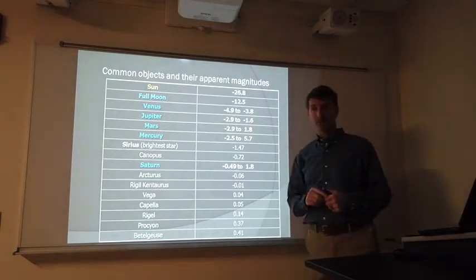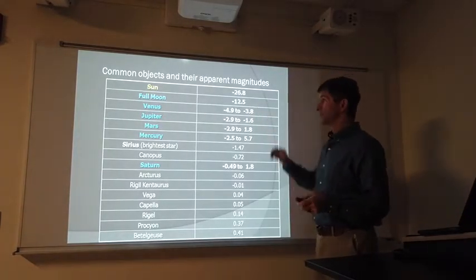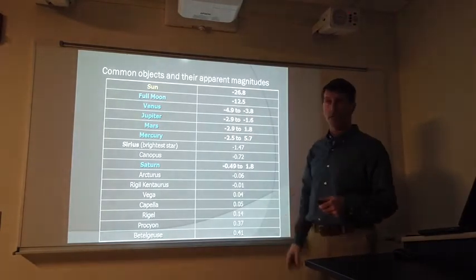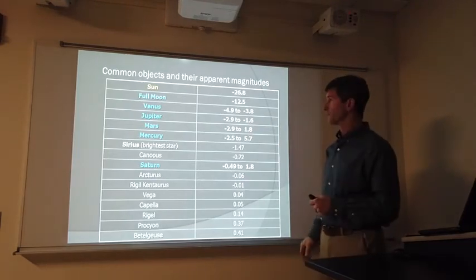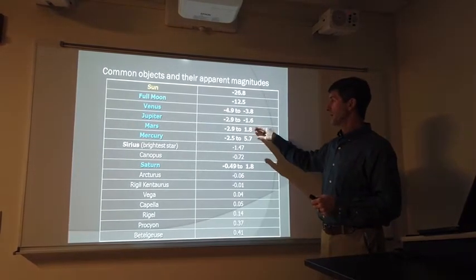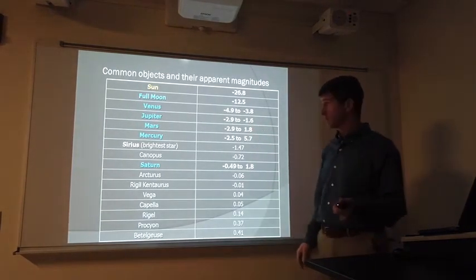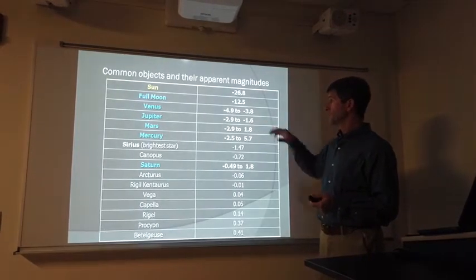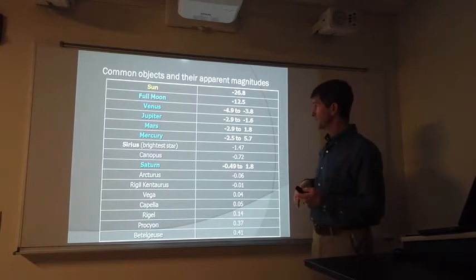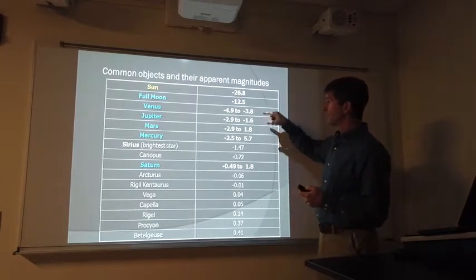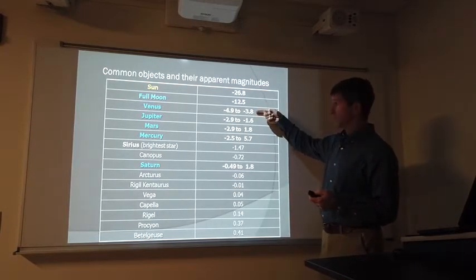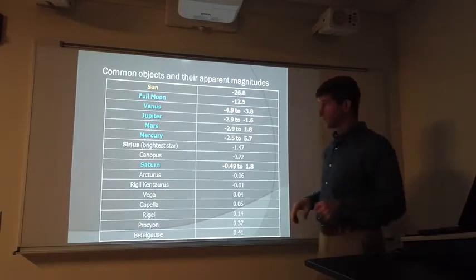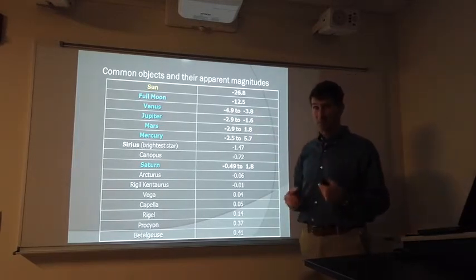Full moon, magnitude 12.5. Venus has a magnitude that ranges from negative 3.8 to a very bright, almost negative 5. Mars varies the most because it's one of the closer planets to us, just like Venus varies. Jupiter, negative 1.6 to negative 2.9. So Venus is the brightest planet in the sky. Jupiter and Mars sort of trade positions in terms of the second brightest planets.